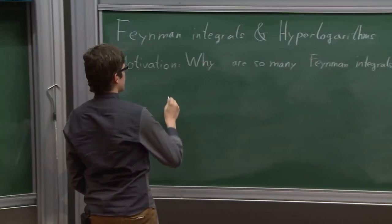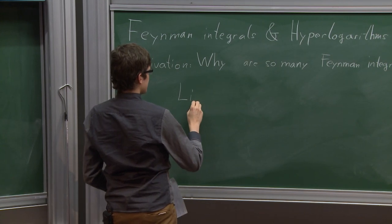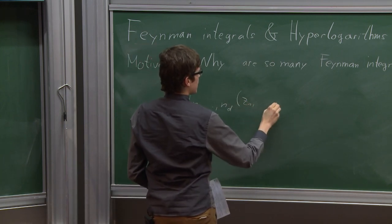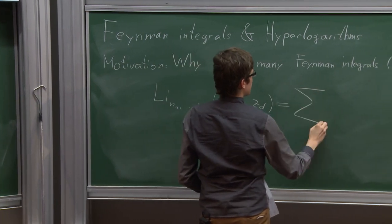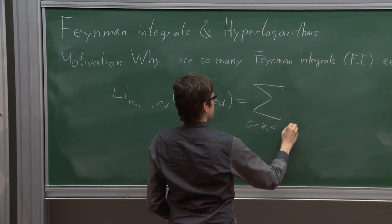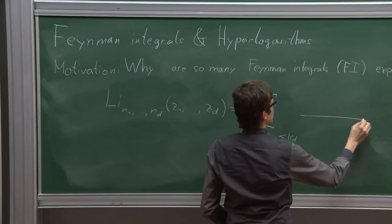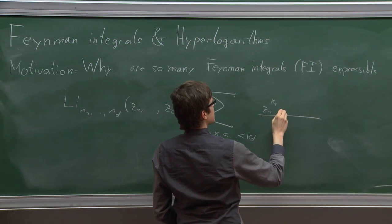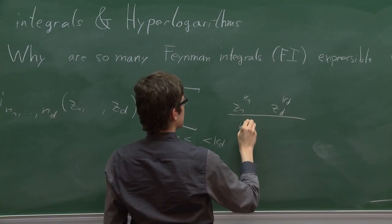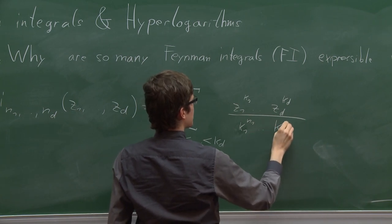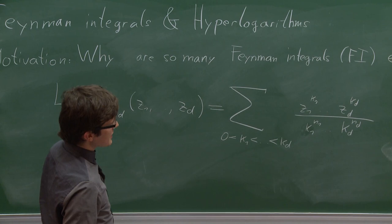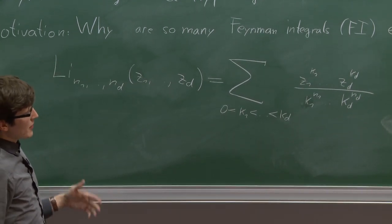The motivation or goal is to understand why so many Feynman integrals, abbreviated as FI, are expressible by multiple polylogarithms. These are functions you can define as multiple series, indexed by integers s_1 to s_d, depending on several complex variables, defined via summation over nested integers k_1 up to k_d.